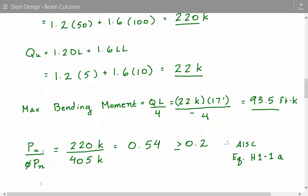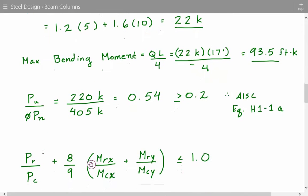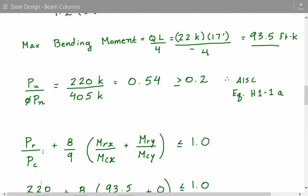So now we'll just plug in all the numbers in this equation, equation H1-1A. The equation is the required axial strength divided by the available axial strength, plus 8 over 9 times the required moment strength divided by the available moment strength with respect to both the strong and weak axis.